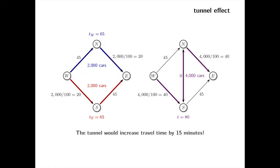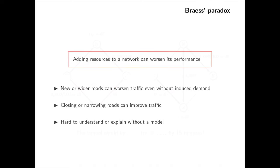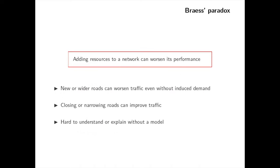This is not of course what most people would expect. The common sense is that adding or widening roads without changing the number of trips should improve travel time, but that is not always the case. Adding resources to a network can worsen its performance. This phenomenon is known as Braess's paradox.